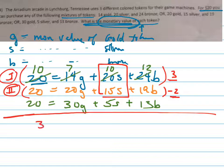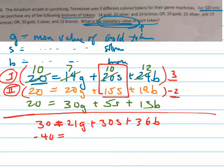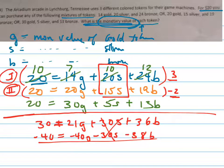So 3 times the first equation is 30 equals 21G plus 30S plus 36B. Negative 2 times the second equation is going to give you negative 40 equals negative 40G minus 30S minus 38B. Those cancel, and my new equation becomes negative 10 equals negative 19G minus 2B.